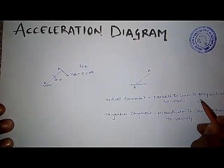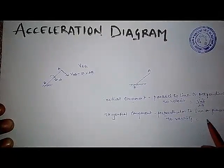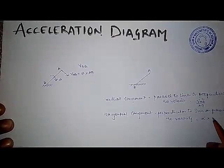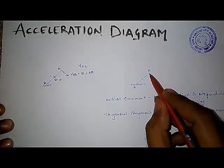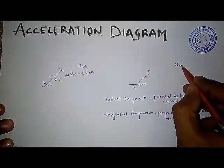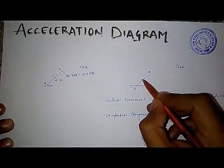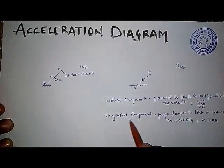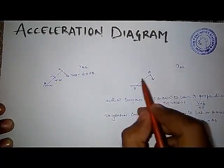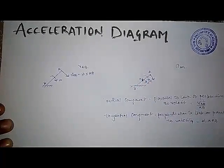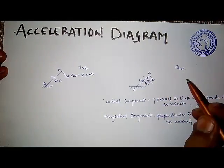The magnitude of the radial component is calculated as V_AB squared divided by the length of link AB. The tangential component is calculated as alpha (angular acceleration) multiplied by the length of link AB. So if we want to find the acceleration of A with respect to B, the radial component is parallel to the link pointing downwards, and the tangential component is perpendicular to the link. The direction of the tangential component is decided by omega and alpha.